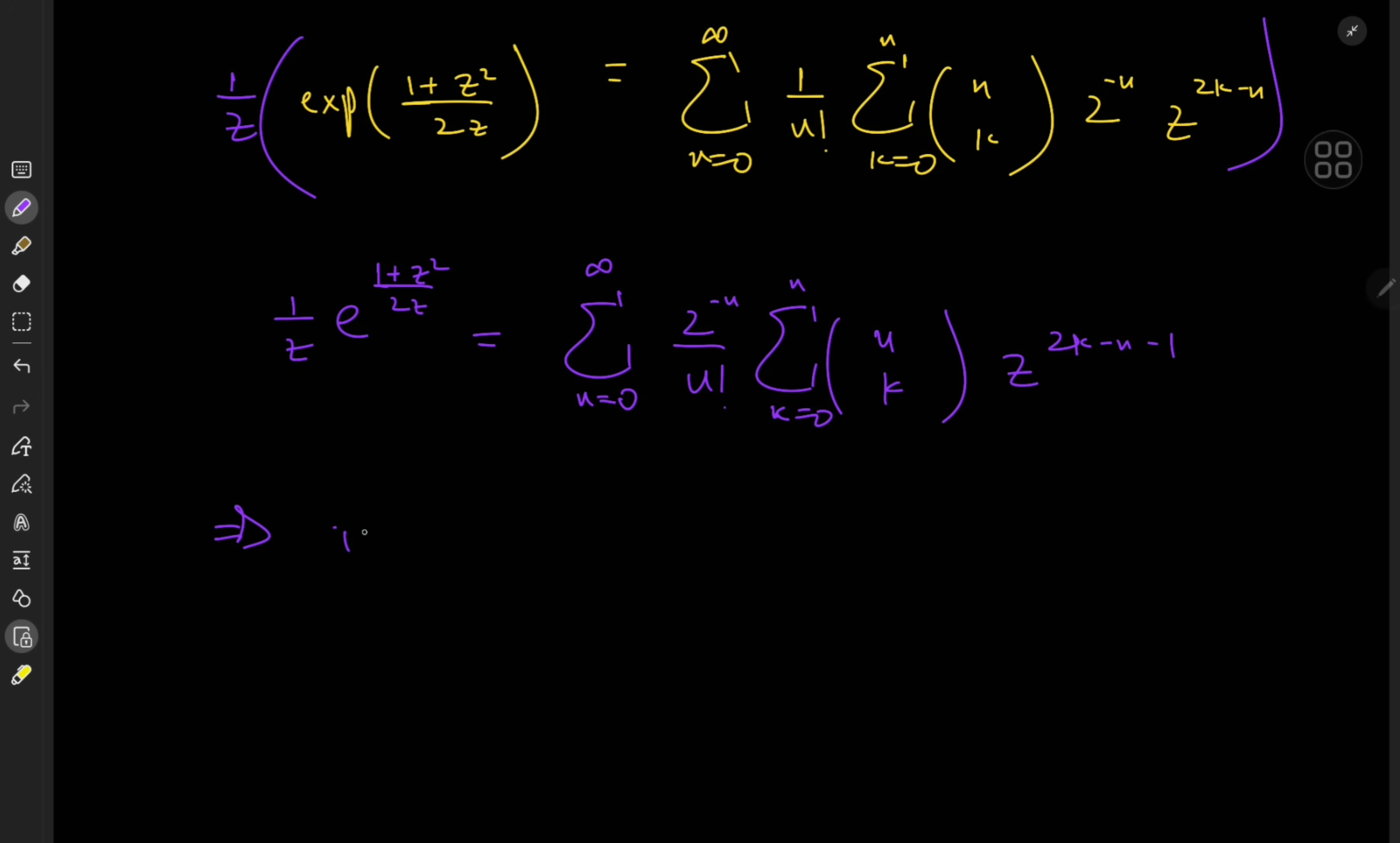So all of this implies that the integral I is 1/i times the sum over n from 0 to infinity, 1/(2^n · n!), sum over k from 0 to n, n choose k, integral over the unit circle of z^(2k - 1 - n) dz.